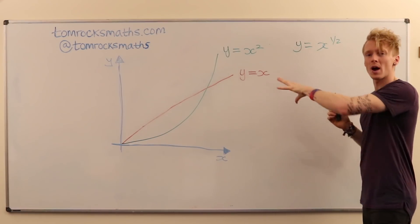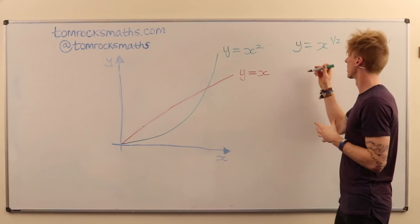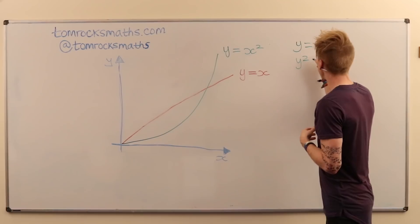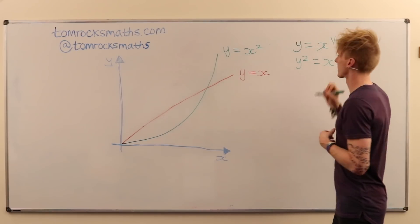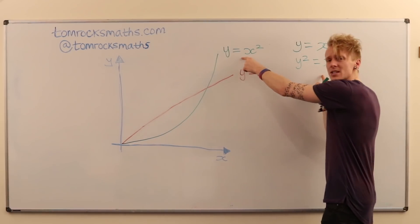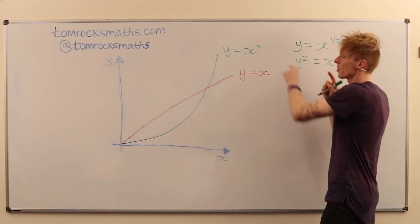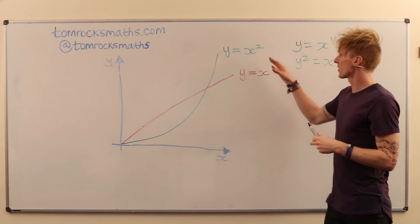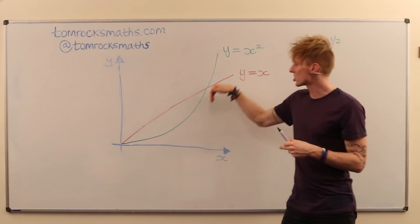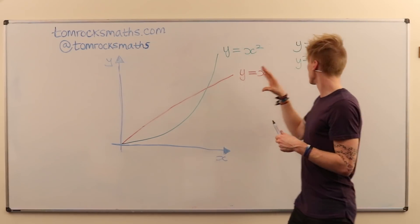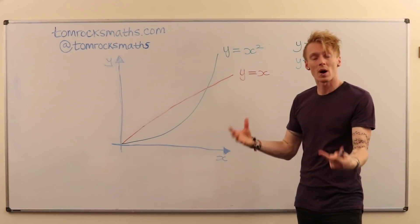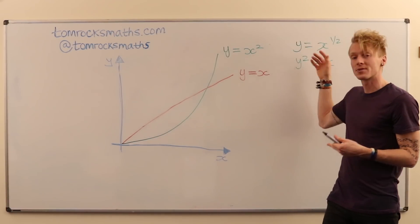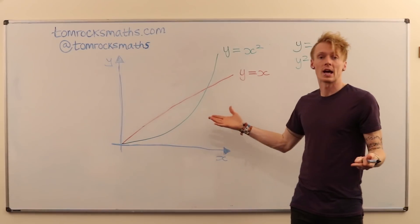If we square both sides of this equation we get y squared equals x and you can see that these two are very similar equations. They just have their x and y switched around. So if the graph of y equals x squared has this shape, then what do you think the graph of x equals y squared or y equals x to the half will look like?